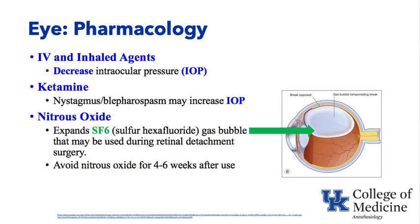Nitrous oxide: if the ophthalmologic surgeon has injected a gas such as sulfur hexafluoride into the back of the eyeball — done occasionally after retinal detachment surgery to tamponade where the break in the retina occurred — that sulfur hexafluoride hangs around for a long time. It is recommended that if a patient requires general anesthesia within a four to six week period after injection of a sulfur hexafluoride bubble, nitrous oxide should be avoided, as it would go into that gas bubble, expand it, and raise the pressure in the back of the eyeball.